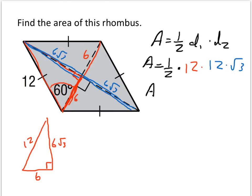Area is 1/2 times 12 is 6, and 6 times 12 is 72, so we have 72√3 square units. 72√3. There we go.